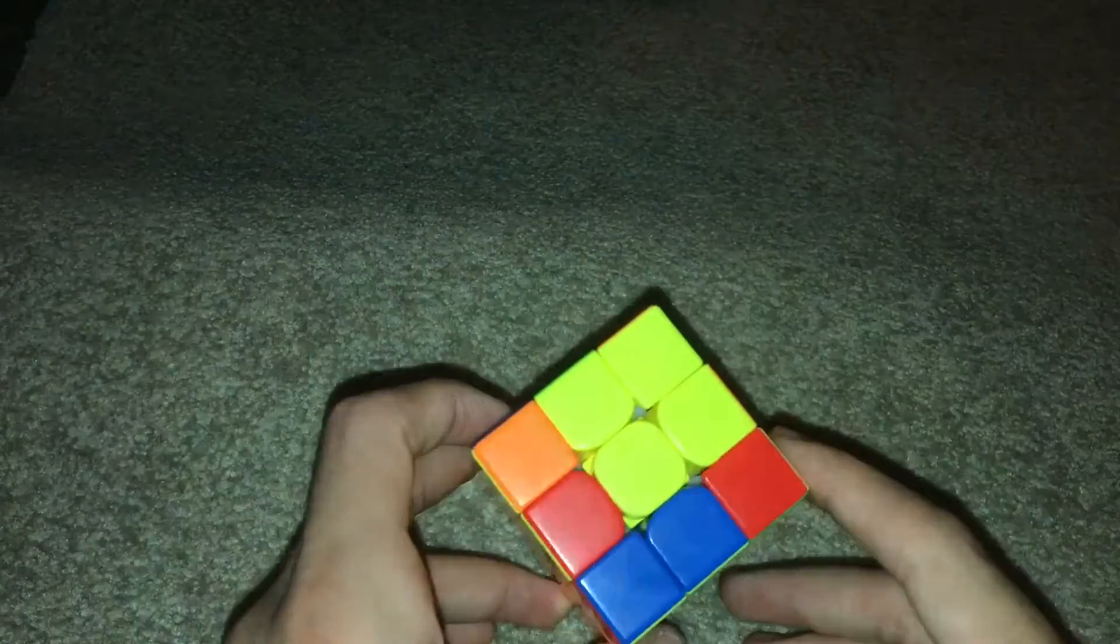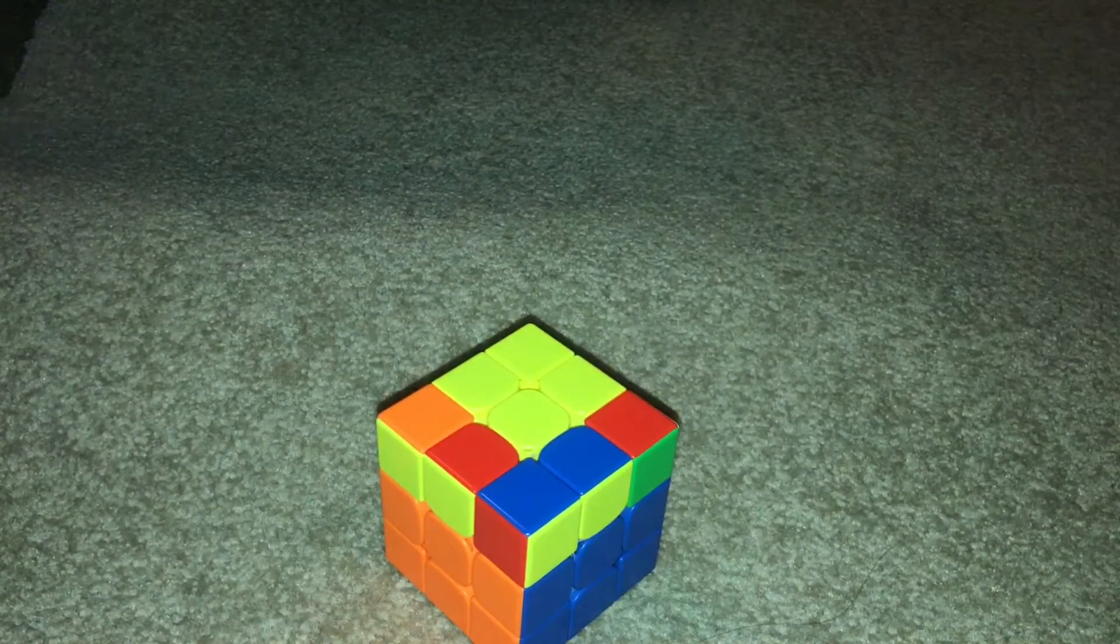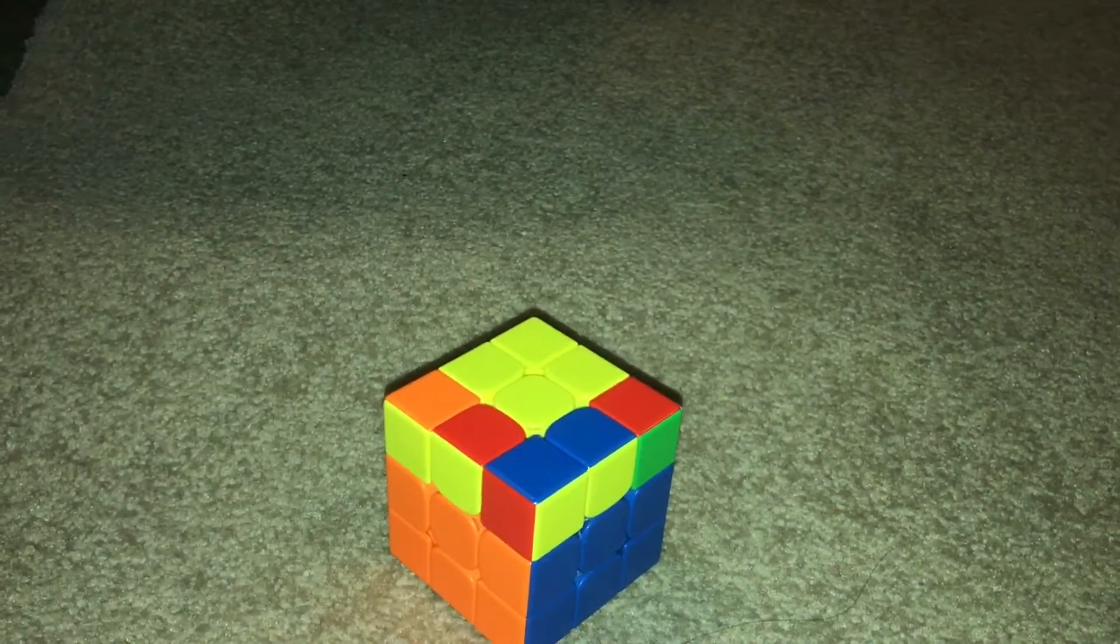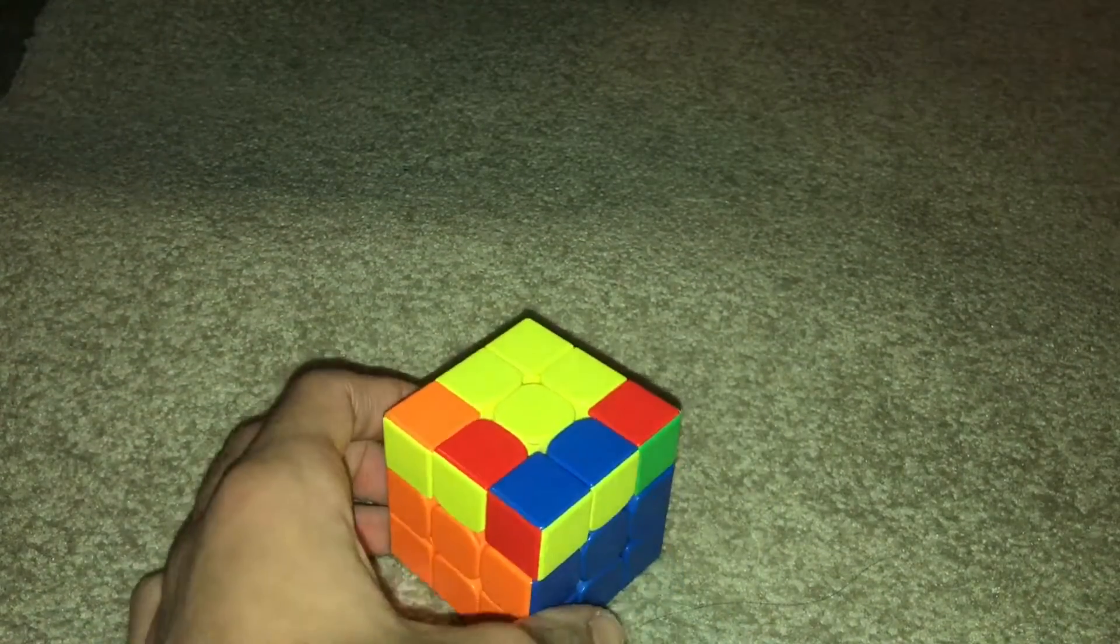On three by three, you will always have two or four edges facing up. If you have three or one, that means your cube is broken, you broke it apart. So yeah, be aware of that.